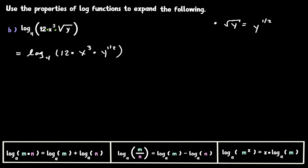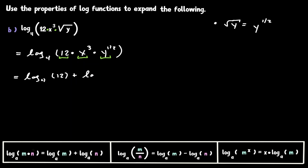Now let's take care of the multiplication. Here we have three expressions that are being multiplied. There's a rule that says anytime you have expressions multiplied inside the log, we can expand them as an addition. We're going to get log base 4 of the first expression, plus log base 4 of the second expression, plus log base 4 of the third expression. Each of the expressions we're multiplying is now written in its own individual log expression.